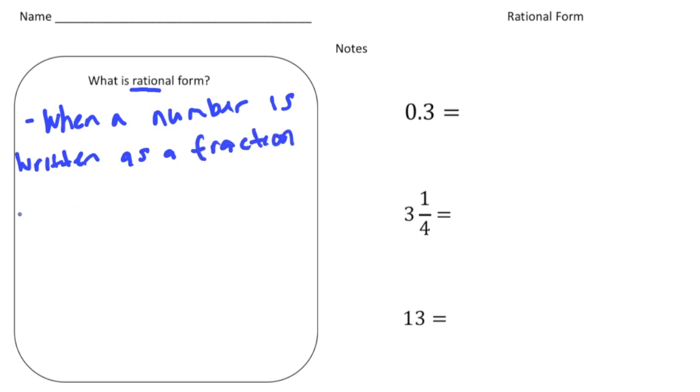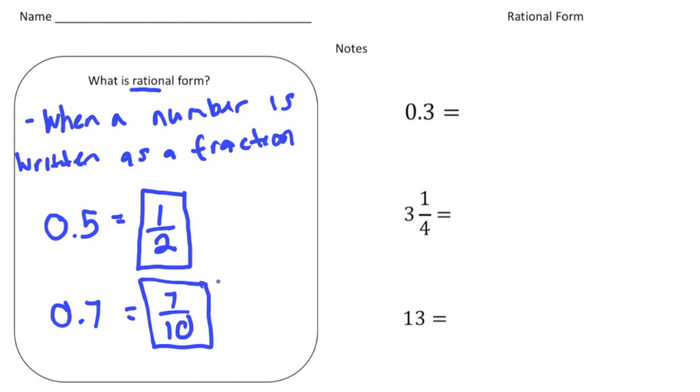So an example would be something like this. Say if we have 0.5, well 0.5 as you know equals 1 half, right? So 1 half is written as a fraction, so this would be in rational form. Same thing for say if we have 0.7. Well, 0.7 as a fraction equals 7 tenths. So 7 tenths is 0.7 in rational form. So anytime a teacher says write it in rational form, you want to write it as a fraction.